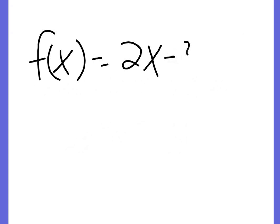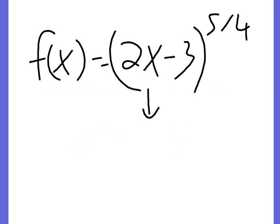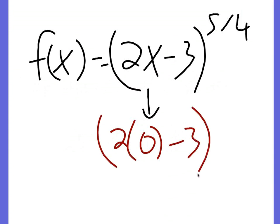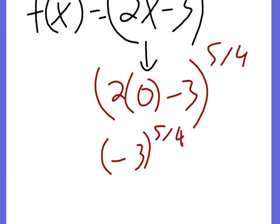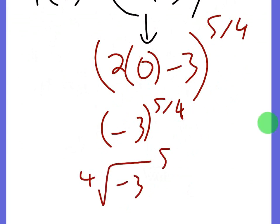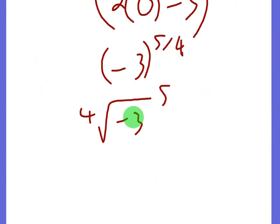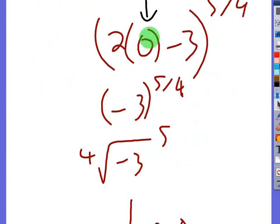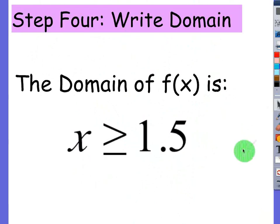We can't plug in 1, for example. The function is f of x equals (2x minus 3) to the 5/4. Let's plug in 0, which is less than 1.5, so we shouldn't be able to use it. Plugging in 0 gives (2 times 0 minus 3) to the 5/4, which is negative 3 to the 5/4. Converting that gives the fourth root of negative 3 to the fifth. You can't take the fourth root of a negative number — nothing multiplied by itself 4 times equals negative 3. So it doesn't exist, confirming 0 is not in the domain. The domain is x greater than or equal to 1.5.